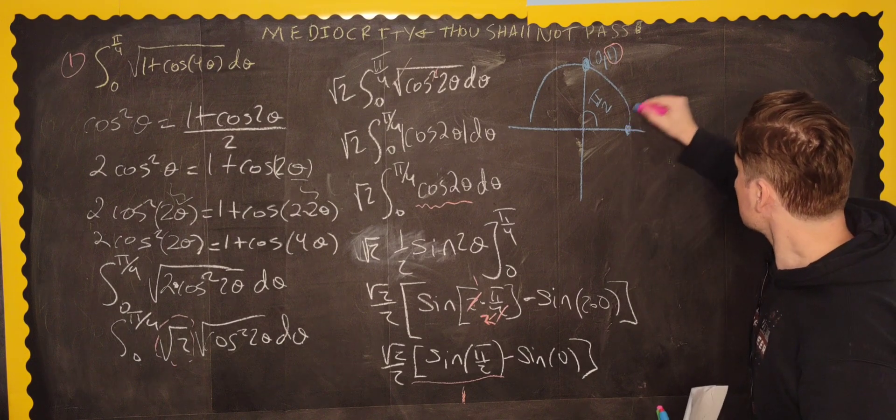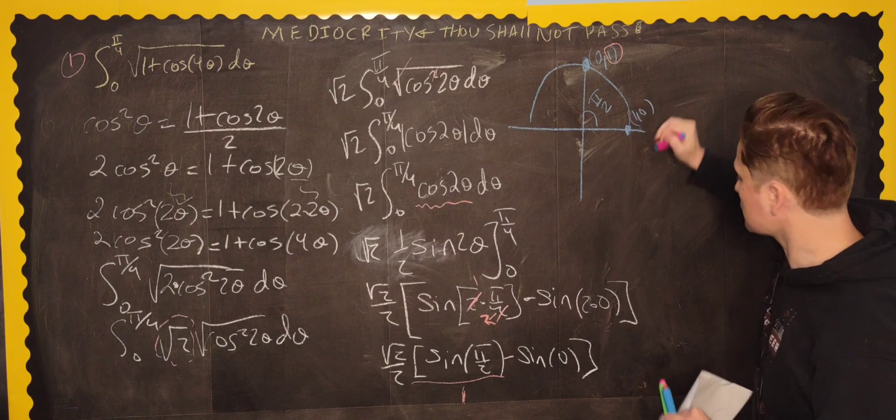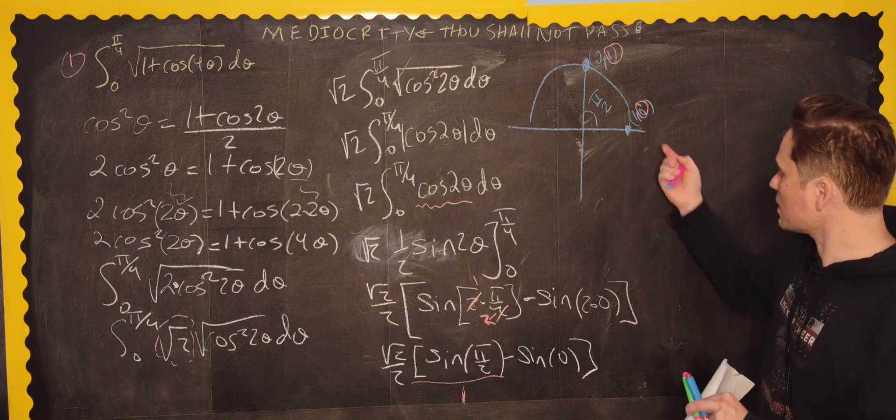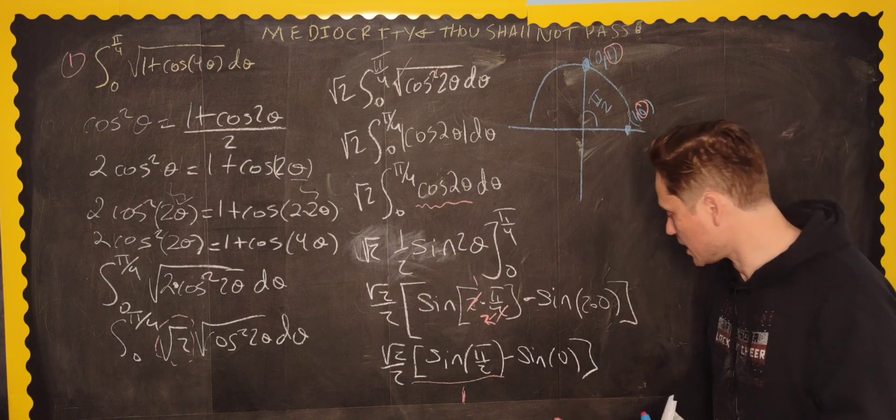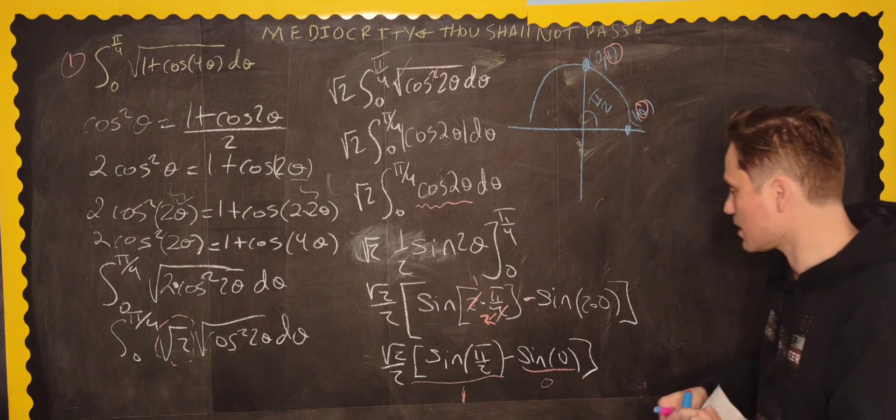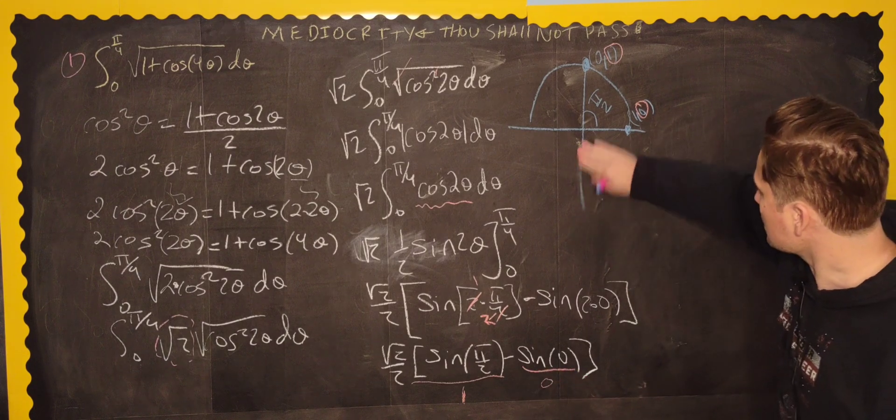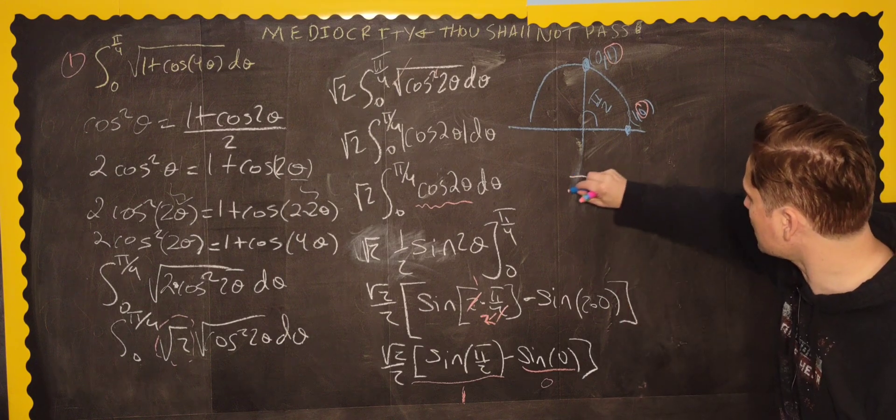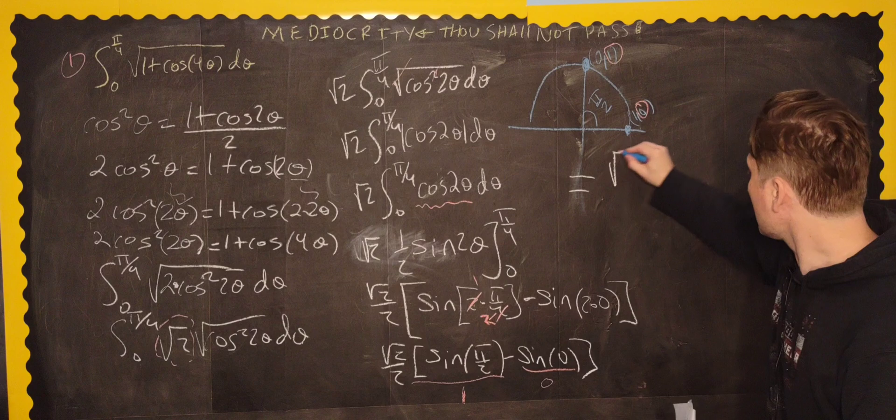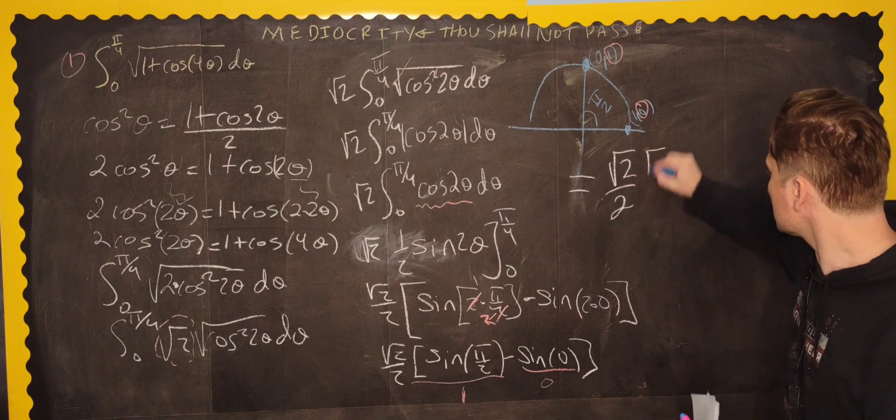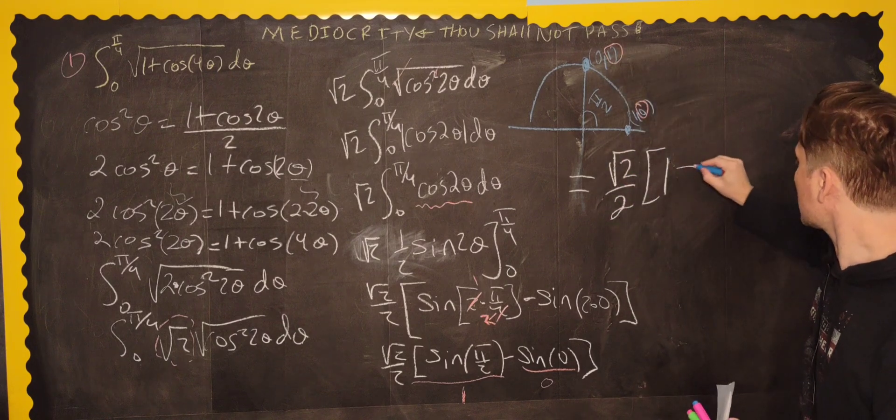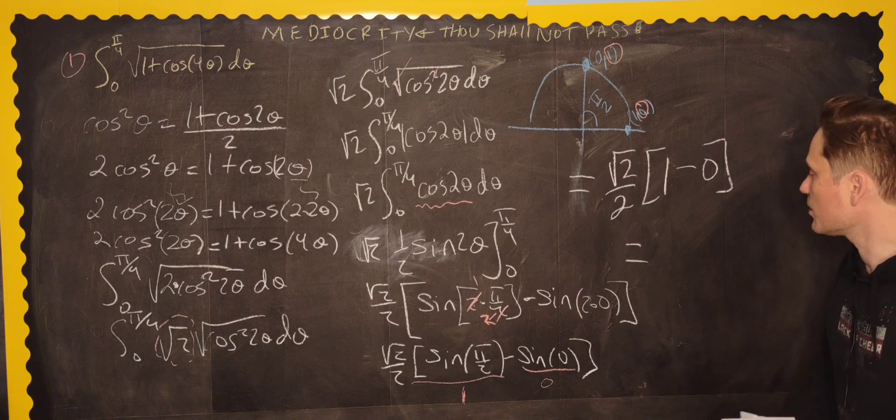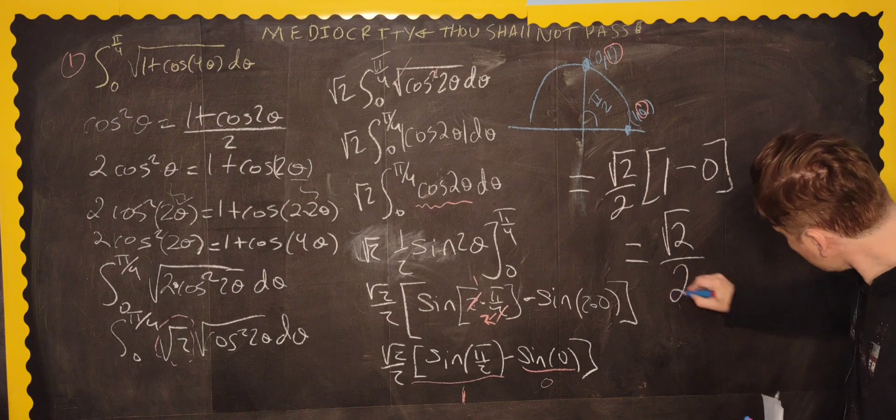And then at this point right here, so this is 1 comma 0. The sine of 0 radians, that's 0 right there. So that means that this part right here, this becomes 0. Therefore, picking up about over here. And maybe exaggerating the size of things. All of this is equal to the root of 2 over 2 with the 1 from here minus the 0 from here. And therefore, we end up with the root of 2 over 2.